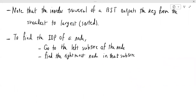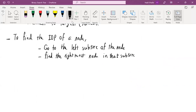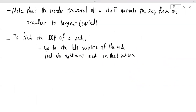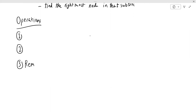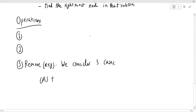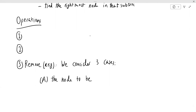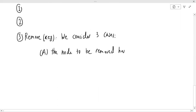Now we are ready to talk about remove, which considers three cases. Case A: the node to be removed is a leaf — it has no children.